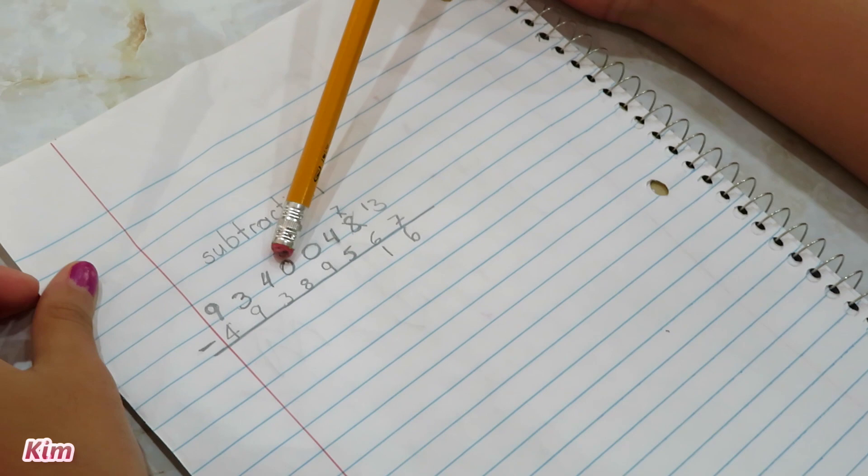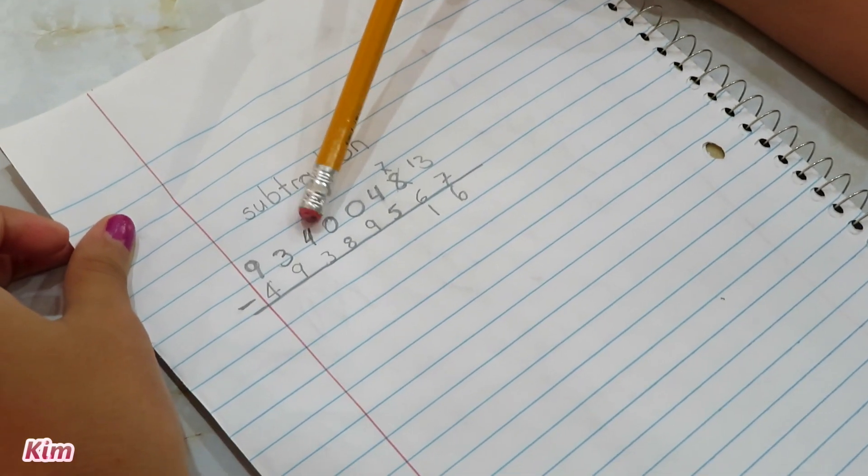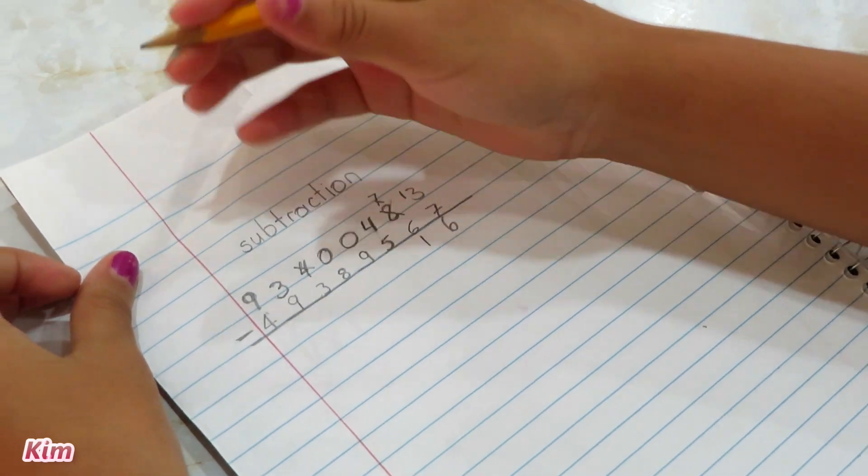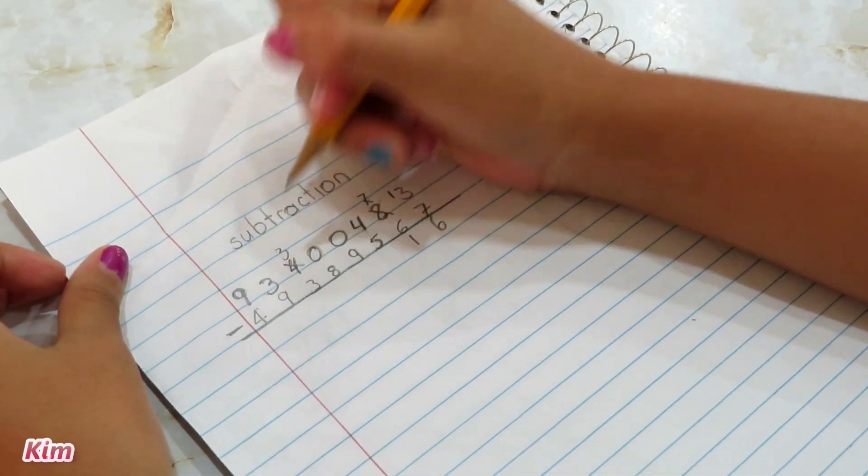Here it's 0, so we have to borrow from the next number. Here it's 4. Here we can borrow. So we have to borrow. We take 1 away, so this is now a 3.